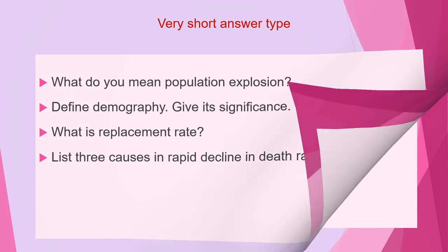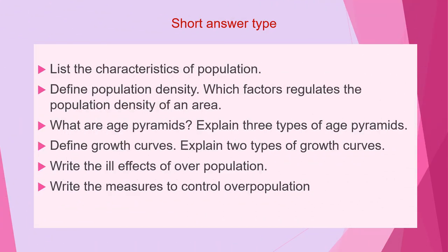The second category of questions are short answer type questions. The first question is: define population density and which factors regulate the population density of an area? Next question is: what are age pyramids? Explain the three types of age pyramids.